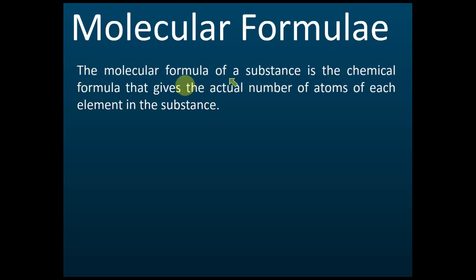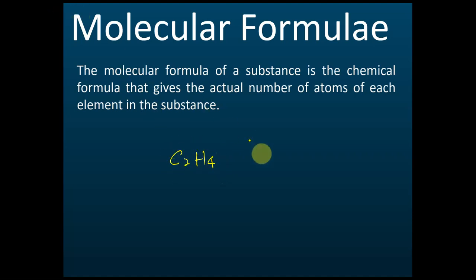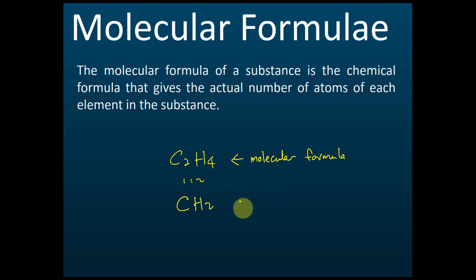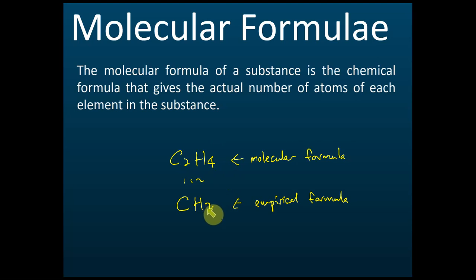The molecular formula of a substance gives the actual numbers of atoms of each element in the substance. For example, ethylene C2H4 — this formula tells us the actual number of carbons and actual number of hydrogens in the molecule. This is called the molecular formula. The empirical formula shows the simplest ratio, like CH2, because the ratio is one to two. This is called the empirical formula.